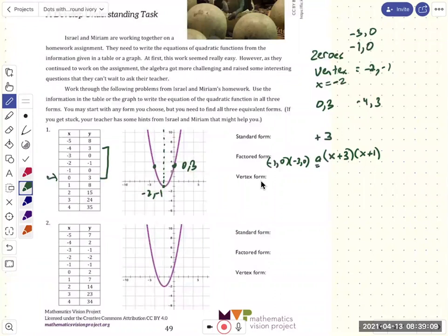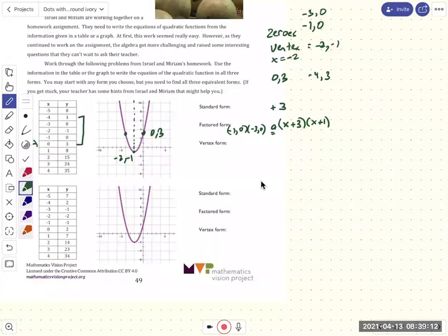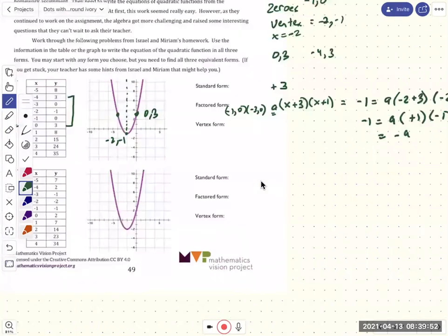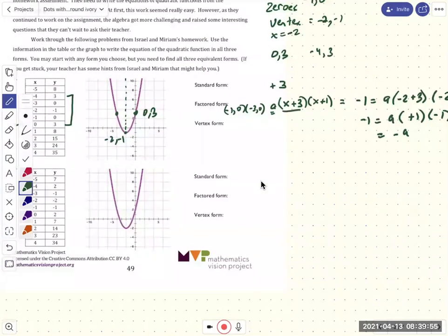All right, so let's give it a try. And so we say, well, what do we need to do? So we will go ahead and say, it's going to be, so if we put in a minus 2, we want to get minus 1. So minus 1 equals a times minus 2 plus 3, minus 2 plus 1. So minus 1 equals a, and so a equals 1. So we don't have to do anything there, so that's nice, right? So our factored form is x plus 3, x plus 1.